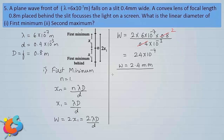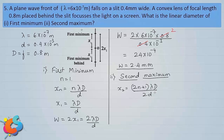Now we go to the second part, which is regarding the second maximum. For a maximum, the distance formula is xₙ = (2n+1)λD / 2d. For the second maximum, n equals 2, so we are left with 5λD / 2d. So x₂ = 5λD / 2d, and the diameter is twice this distance.